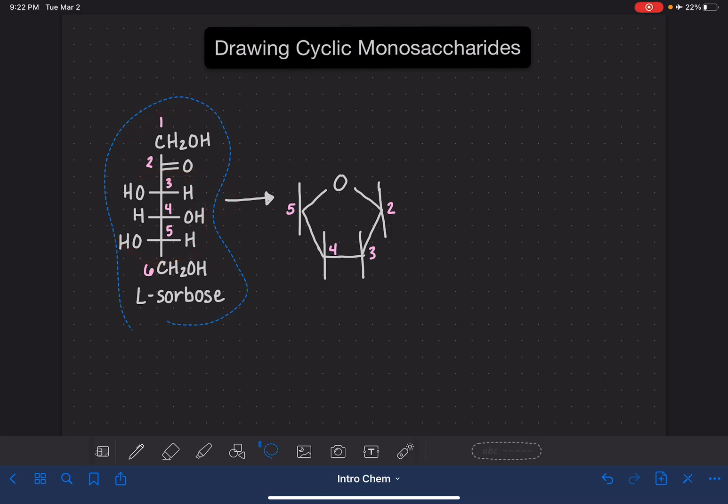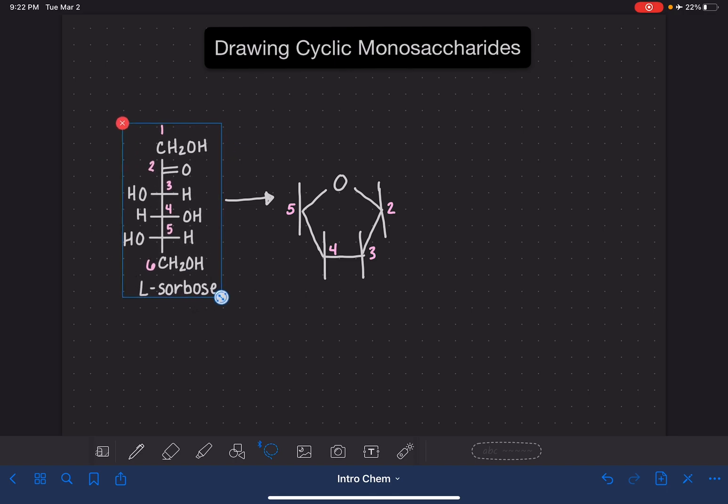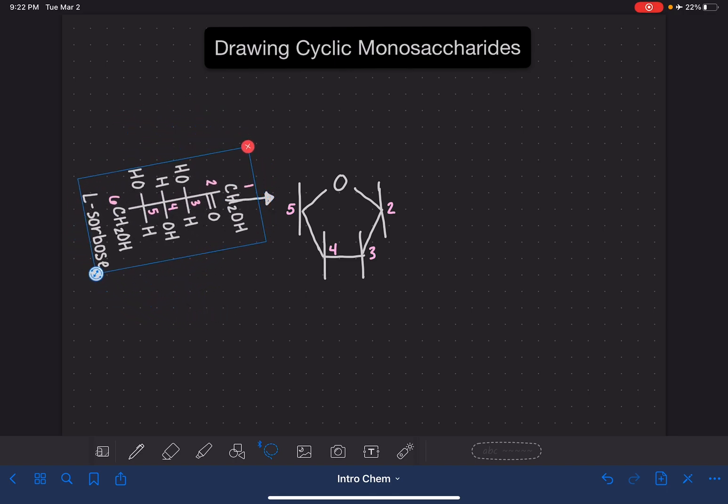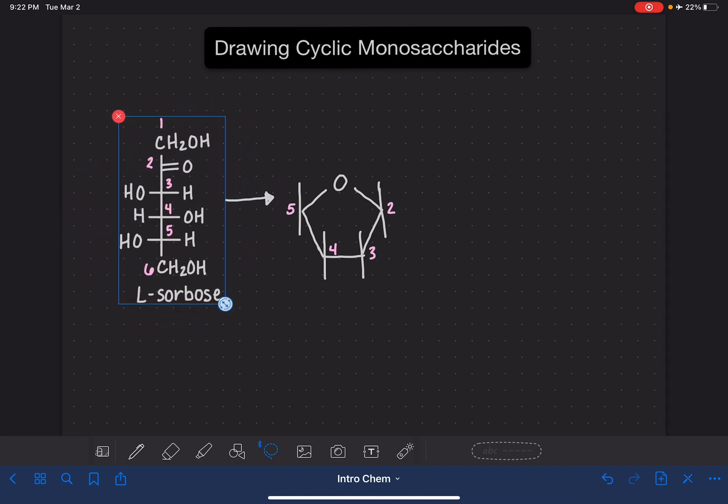Now, as a refresher, when this molecule turns itself into a cyclic structure, it does that by turning itself on its side. So any OH groups that are on the right-hand side of the straight chain structure are going to end up at the bottom, pointing down of the cyclic structure. So if it's on the right-hand side of the straight chain structure, that means that it ends up pointing down in the cyclic structure.